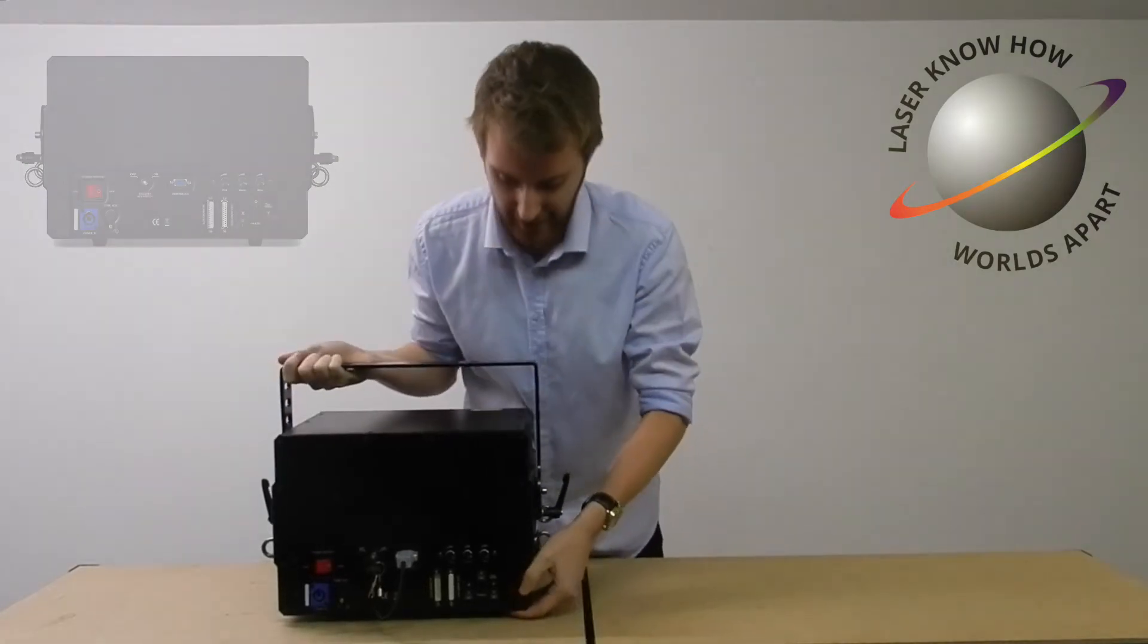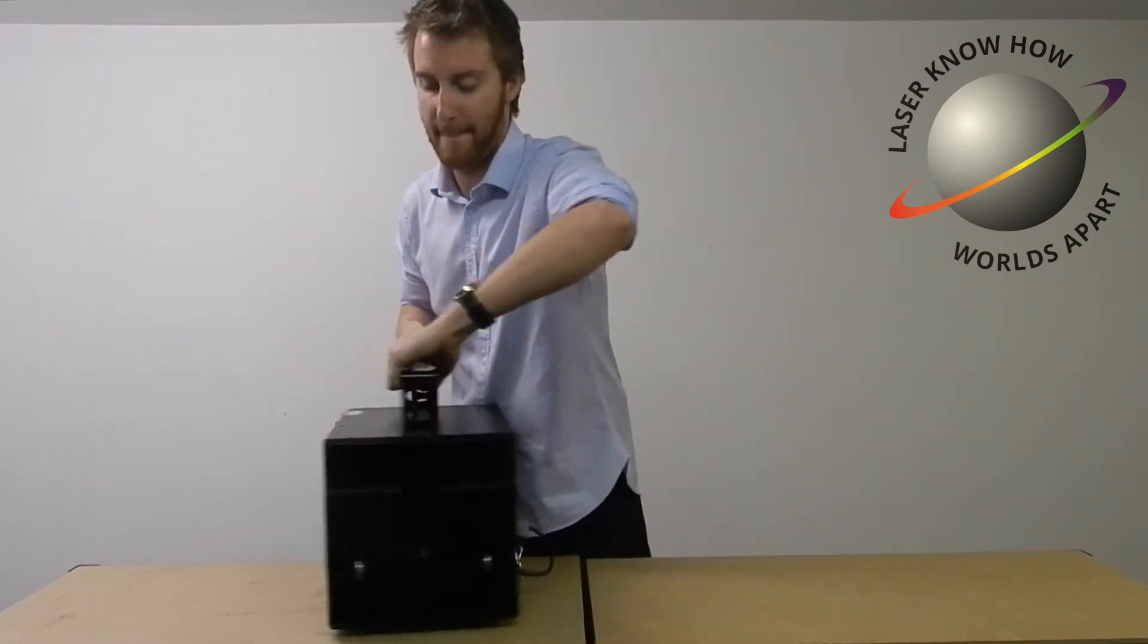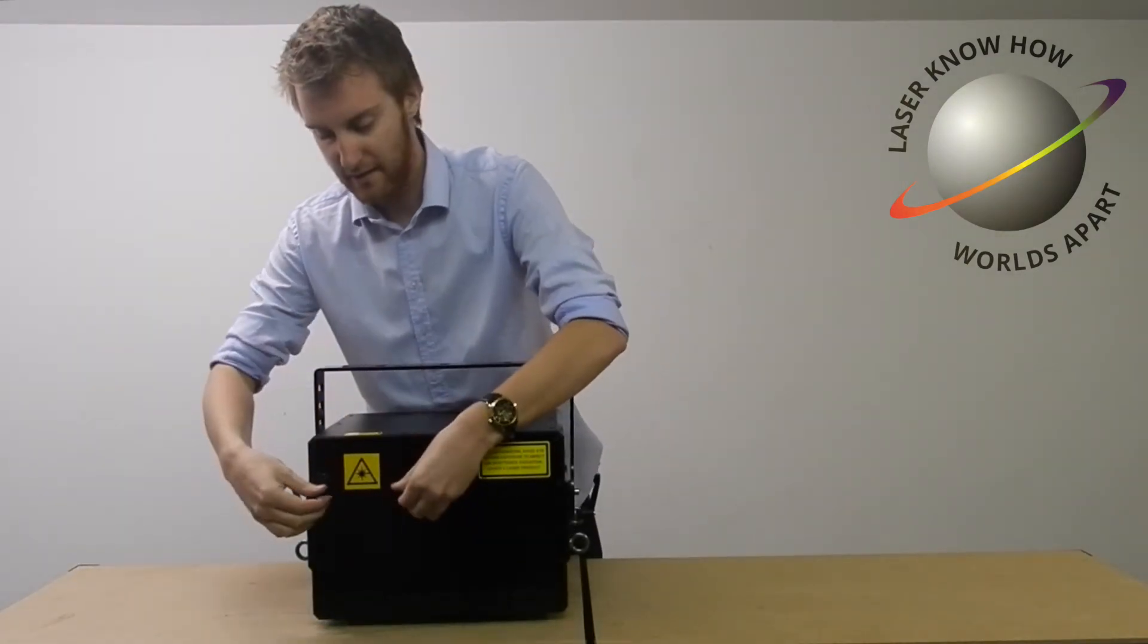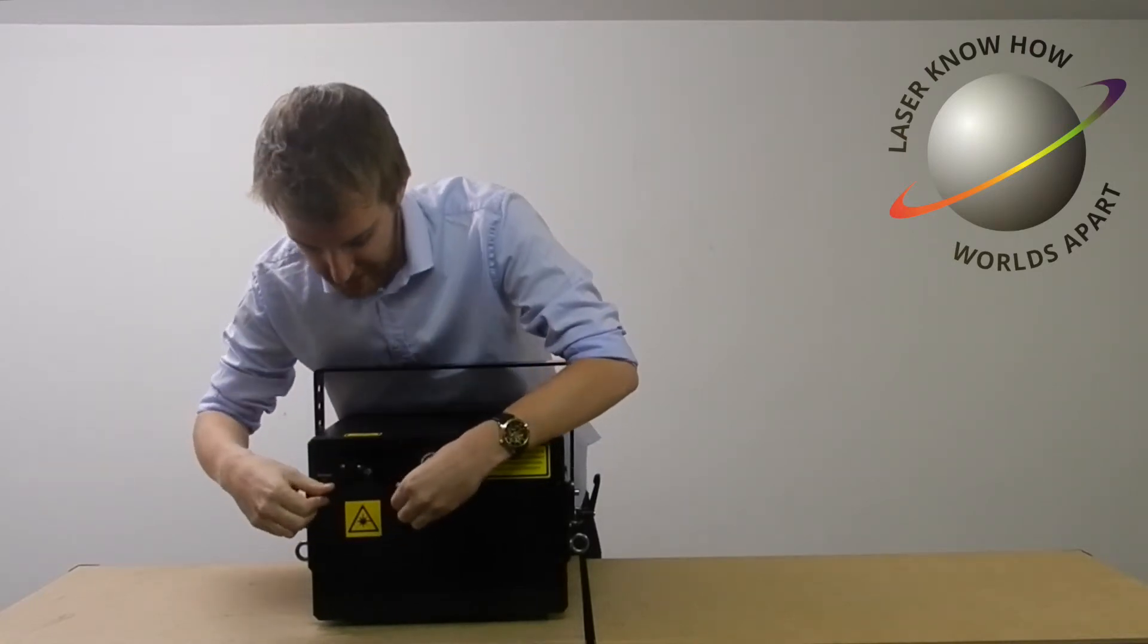So if we spin it back round, you can see here we've got the laser aperture protector. Two screws, down it comes, lock that back in place.